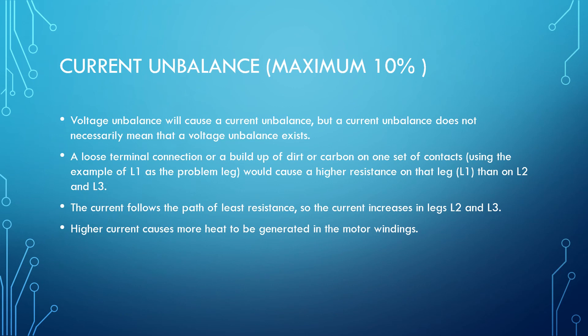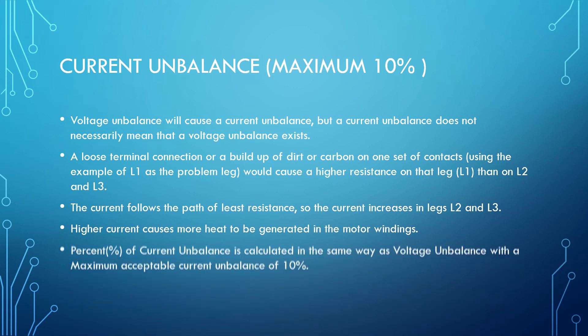Higher current causes more heat to be generated in the motor windings. Percent of current unbalance is calculated in the same way as voltage unbalance, with a maximum acceptable current unbalance of 10%.